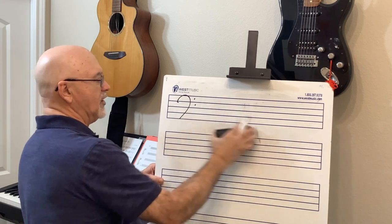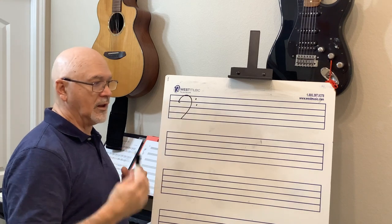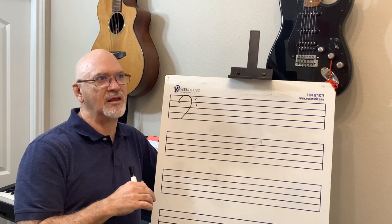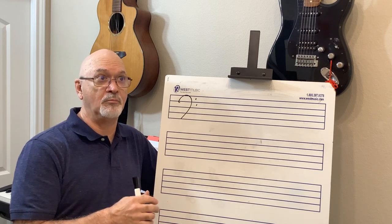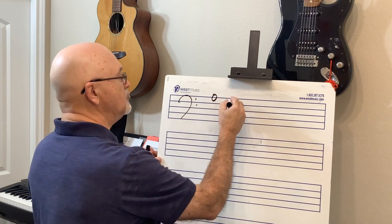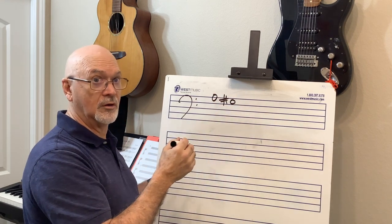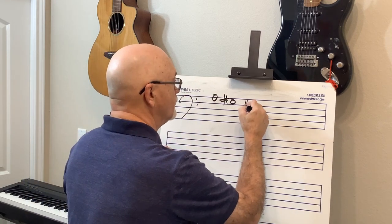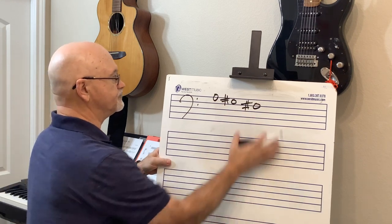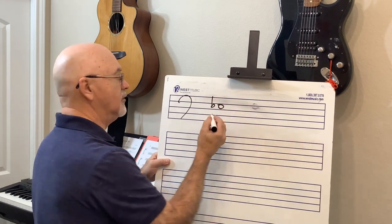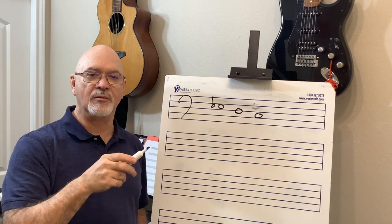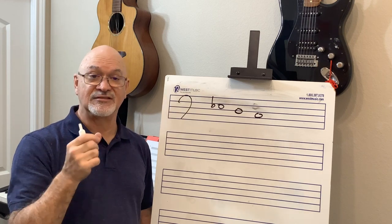Let's rehearse scale degree names. Key of C: what's the submediant? A practical way to find it: go down from the tonic a half step — that's the leading tone, G-sharp — then one more whole step down to F-sharp. That's the submediant, which is also the relative minor. Key of E-flat: leading tone is D, whole step down is C — that's the submediant. From tonic to submediant is a half step then a whole step down.